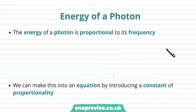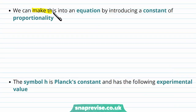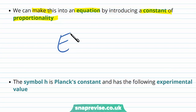We've said that a photon is a packet of energy. We want to think about what value of energy a photon has. The energy of a photon is proportional to its frequency, and mathematically we can write this using the proportionality sign. We can make this into an equation by introducing a constant of proportionality.